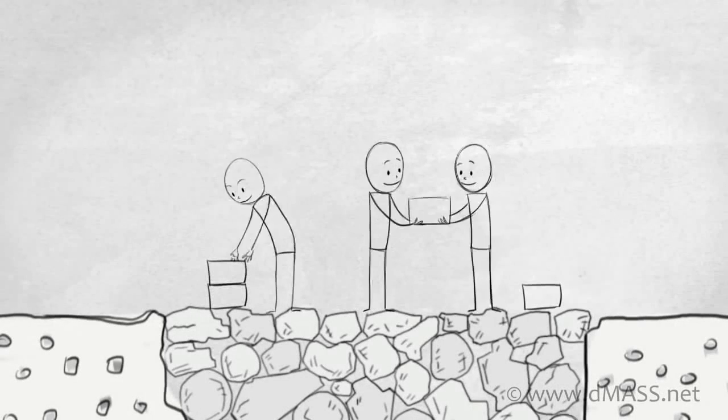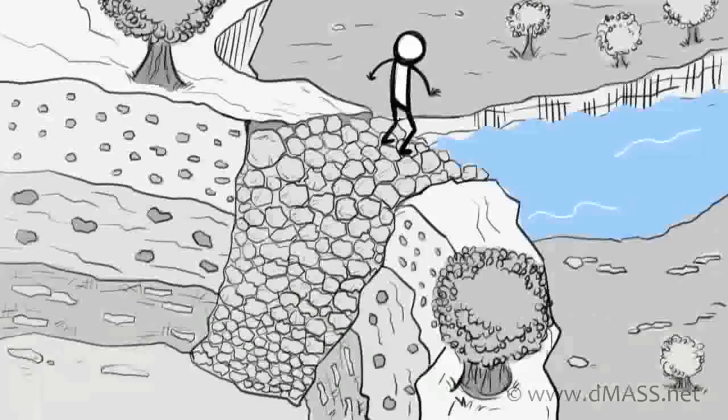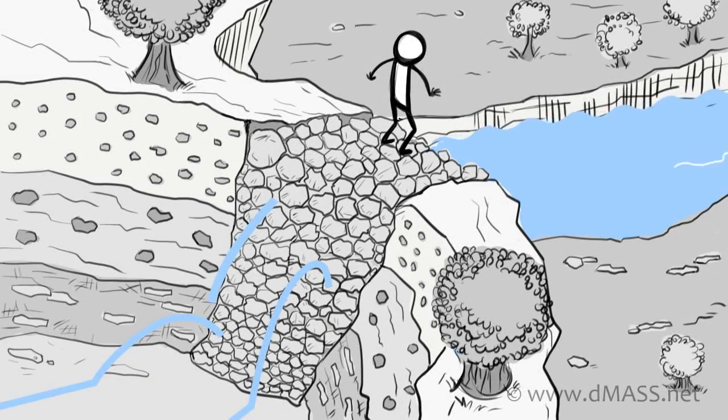But it enormously increased wealth because they could trade. But they discovered that there was a problem. There was a stream at the bottom, and the stream water was building up on the back end and causing a problem.